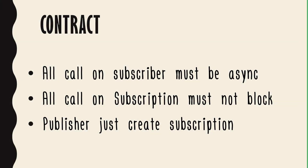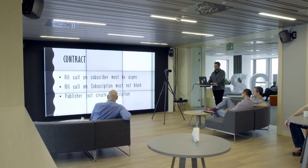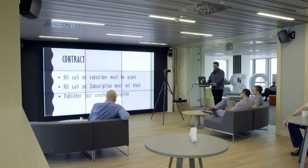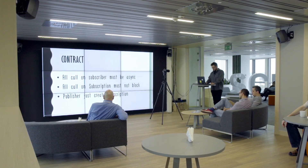The contract between methods states that all subscriber methods need to be async. All calls to subscription also must not block, because in a reactive environment we don't want blocking threads. And the publisher does nothing more than create the subscription. The whole communication between them is through the subscription object — they don't know about each other.